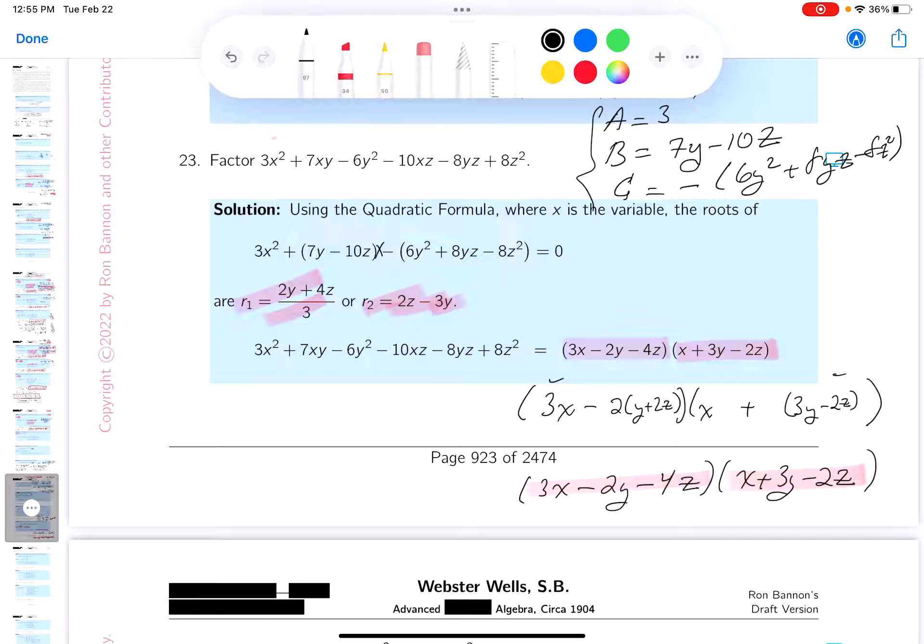So if you're going to write the answer for this one over here, what would it look like? It would look like x minus root number one, which is 2y plus 4z over 3, and then it would be x minus the second root, which is 2z then plus 3y. I got trouble though. I don't have the leading coefficient of the three, so you put it in and then I'll make my association.